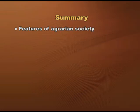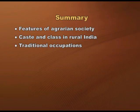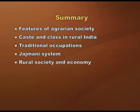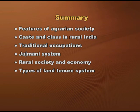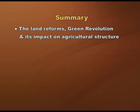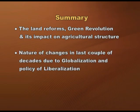Briefly, in this chapter we have learned about change and development in rural India. Topics covered include features of agrarian society, caste and class in rural India, traditional occupations, jajmani system, rural society and economy, types of land tenure systems, land reforms, green revolution and its impact, and finally the nature of changes in recent decades due to globalization and liberalization. This is all about change and development of rural society in India. Thank you.